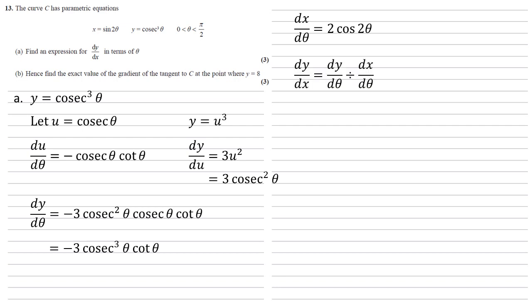Now to get dy by dx, we can do our dy by dθ divided by our dx by dθ. If you think of that, if we're dividing by a fraction, this is like multiplying by dθ over dx. The dθ's will cancel out, we'll end up with dy by dx.